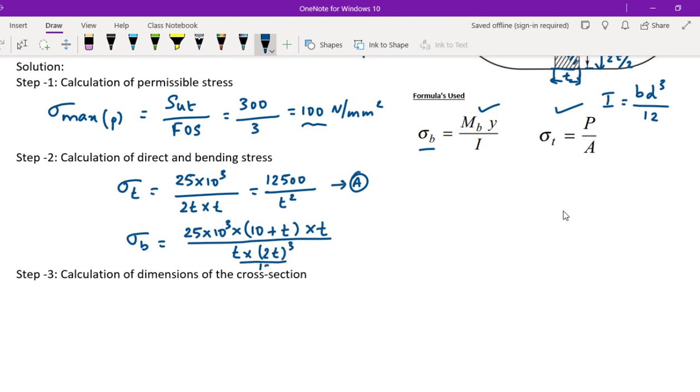So the equation becomes 25 into 10³ into 10 plus T into T into 12 divided by T into 8T³. We cancel T. So it's 25,000 into 10 plus T times 12 divided by 2 times 8T². This gives us 37,500 into 10 plus T divided by T². This is equation B.